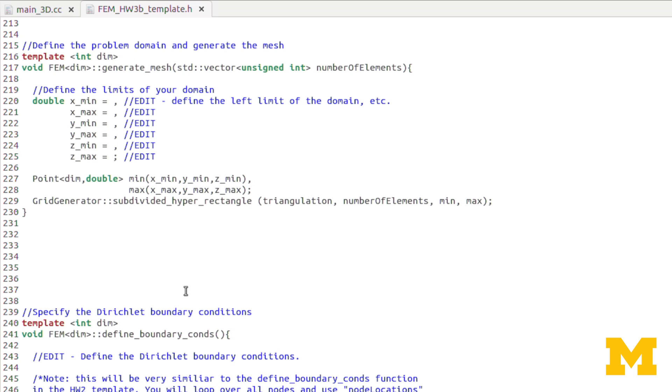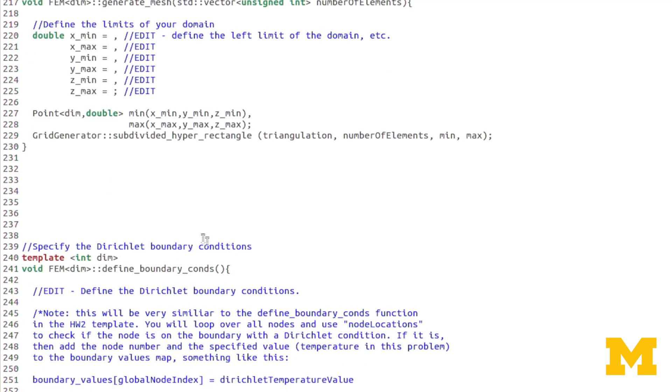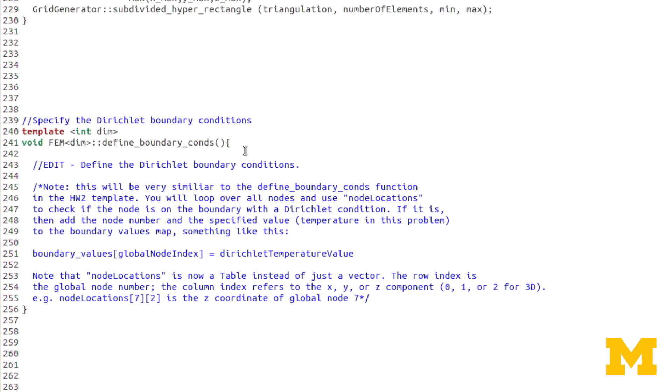We'll scroll down to generate mesh. Again, very similar as before, to what we had before, except now we have Zmin and Zmax, that you'll be defining the top and bottom boundaries of your domain. Defined boundary conditions will be essentially the same as the 2D problem.